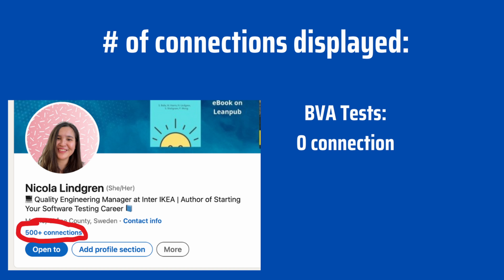Let's get into another example: the number of connections displayed. Here is a partial screenshot of my LinkedIn profile. One of the current features on LinkedIn is that when you have above 500 connections, they no longer show the exact number of connections you have.